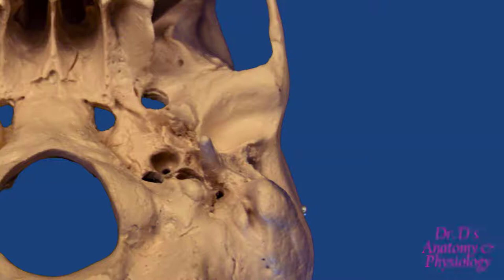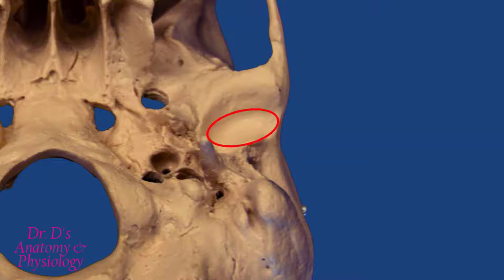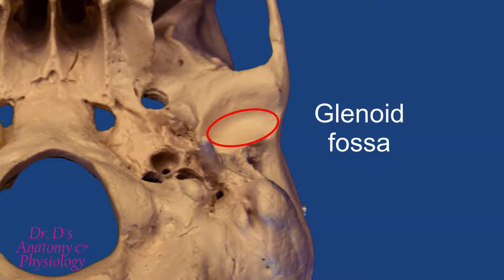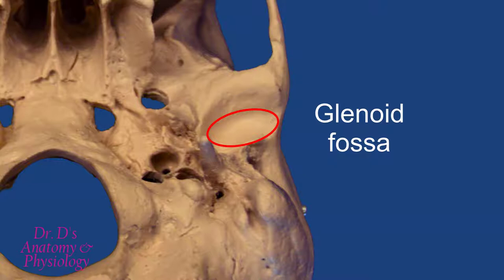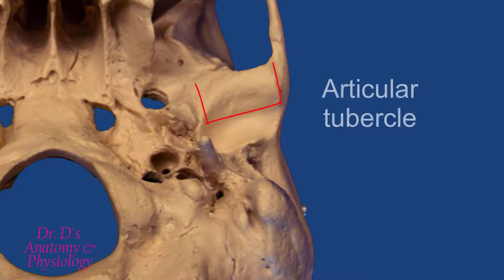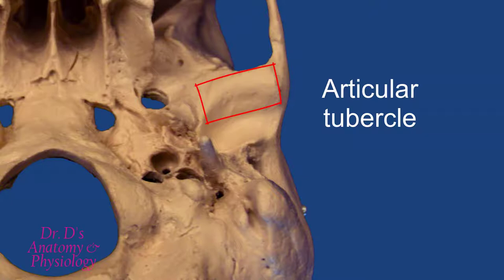From this perspective you can see that the mandibular fossa — also known as the glenoid fossa — is indeed a rounded, somewhat elliptical depression. In the living skull, the surface of this bone would be very smooth because it would be lined by smooth articular hyaline cartilage. Here you get a better appreciation of the articular tubercle: it is a raised portion of the zygomatic process and is somewhat cylindrical in shape.